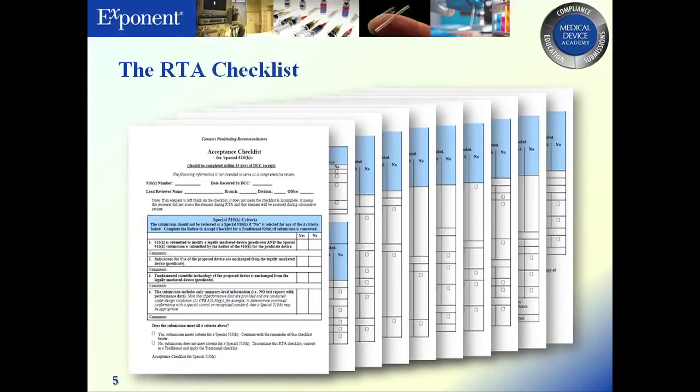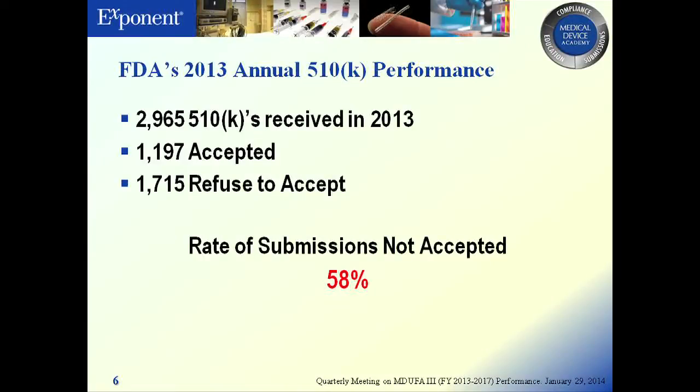So what did we get? Here's the RTA checklist. It is enormous — it has multi-part questions and separate sections for different pieces. It is anything but administrative. There's definitely a blurred line between that administrative and substantive review. In 2013, FDA received 2,965 510Ks. They accepted through RTA only 1,197 of them. 58% of the 510Ks that showed up at FDA's door were turned back under the RTA guidance based on the checklist.